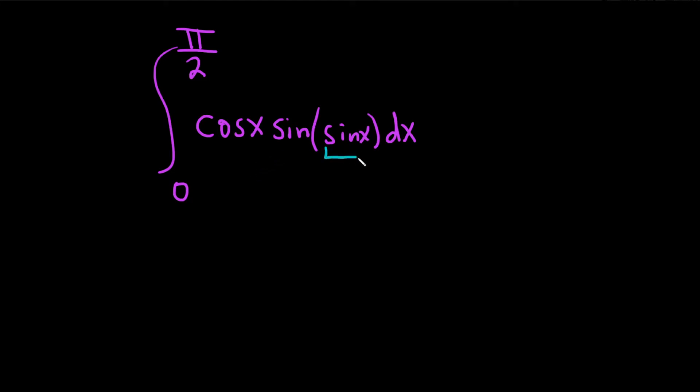I'm thinking if we let u be sine, then the derivative of sine is cosine and so we'll just end up with the sine of u. That seems to be a good strategy. So let's let u equal the sine and then let's compute du. So du is the derivative of u, so the derivative of sine is cosine, and then we have our dx here.